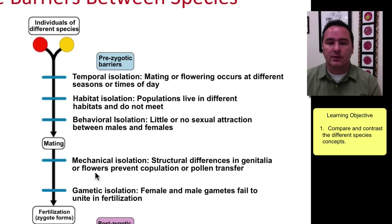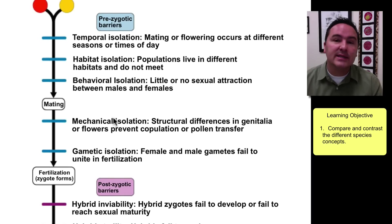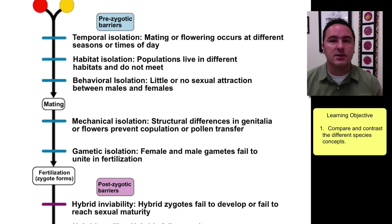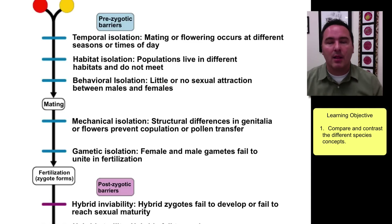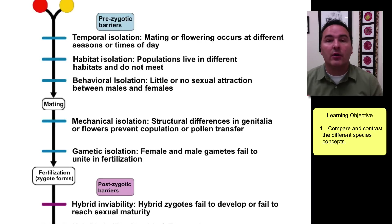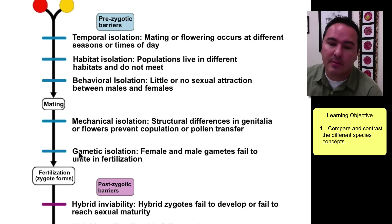If mating does occur, that may not mean there is a successful fertilization. The next barrier is mechanical isolation. Insects have an exoskeleton, so all external genitalia is hardened and sclerotized. Many insects need a lock-and-key mechanism where the male genitalia fits inside the female genitalia — if you don't have the right shapes, things don't fit.